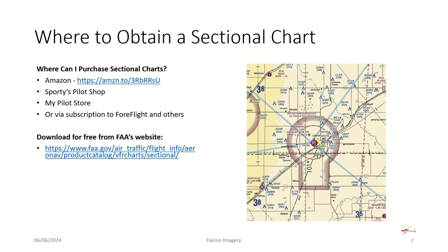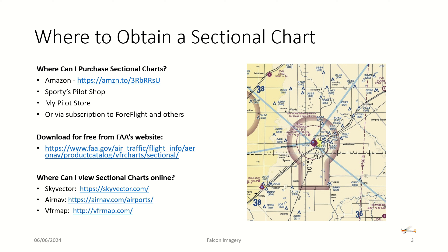You can also download sectional charts for free from the FAA's website. The only problem is it's sometimes difficult to utilize or read them and know when they expire. Three online websites I've used that maintain current status on sectional charts — like a mosaic pulled together across the U.S., Hawaii, or Alaska — are SkyVector, AirNav, and VFRMAP.